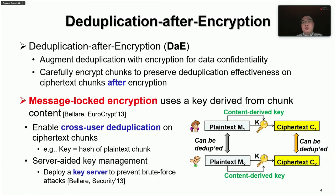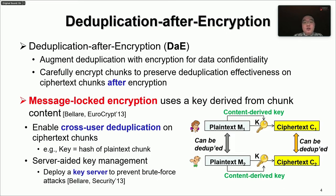To further realize data confidentiality, current approaches follow a paradigm called Deduplication After Encryption, DAE, to augment deduplication with encryption. It carefully encrypts plaintext chunks to preserve deduplication effectiveness on ciphertext chunks after encryption. Message Lock Encryption is the cryptographic primitive to realize DAE by using a key derived from the chunk content for encryption and decryption, such that duplicate plaintext chunks are always encrypted to duplicate ciphertext chunks. A typical instance is Converging Encryption, where the key is the hash of the plaintext chunk content. To prevent adversaries from enumerating all possible keys, current DAE approaches deploy a dedicated key server for key generation.